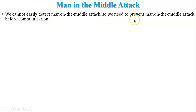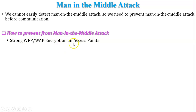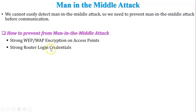We cannot easily detect the man-in-the-middle attack, so we need to prevent it before communication begins. To prevent a man-in-the-middle attack: first, use strong WPA or WPA2 encryption on your wireless router access point or hotspot, and check whether any unknown users are connected to your hotspot or Wi-Fi. Second, use strong router login credentials — if your router credentials are weak, anyone can join your router and attack your conversation.